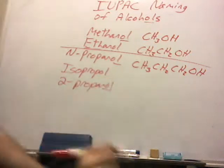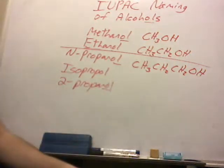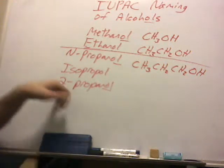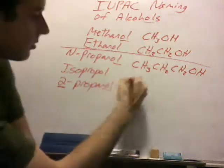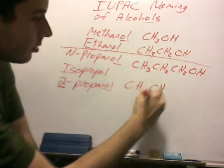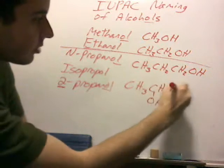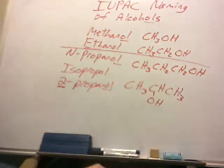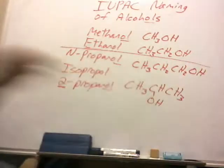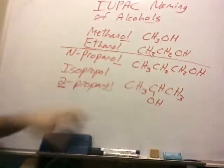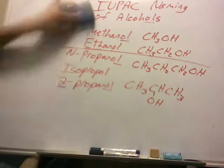2-propanol is the more correct IUPAC name, and isopropyl alcohol is more of a — not slang, but not as correct as 2-propanol — because it tells you the alcohol group is on carbon two. So the structure is CH3CHOHCH3. You can see that as the carbon molecules get longer and more complex, there are more and more possible isomers.